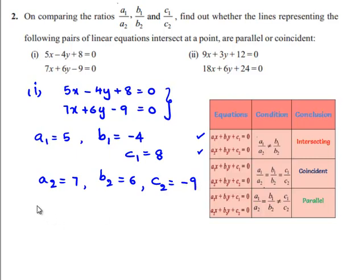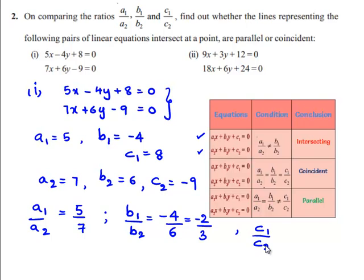Let us find a1 by a2, which is 5 by 7. b1 by b2 equals minus 4 divided by 6, which is minus 2 by 3. c1 by c2 equals 8 by minus 9, which is minus 8 by 9.